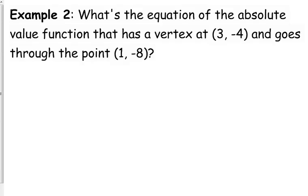Now, you don't necessarily have to have a visual representation here, but I think that it does help if we're trying to figure out how to write this equation. So I'm going to plot these two points. 3, negative 4, that is my vertex. And 1, negative 8 is another point that this is going to go through. So, based on what I know about absolute value, this function has got to look somewhat like this, right?